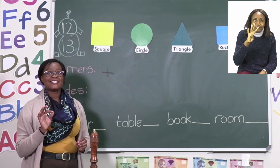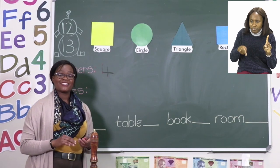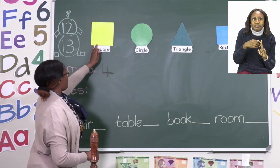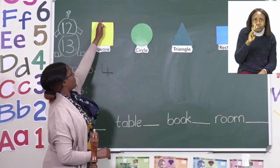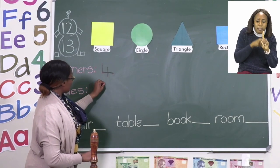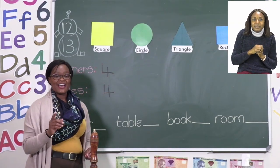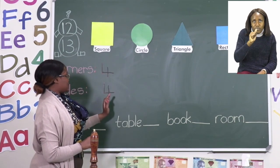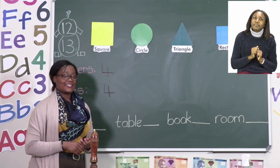Then we need to count the sides. It also says it has dash sides. Let's see how many sides it has: one, two, three, four sides. So it also has four sides. We know that shape's name is a square, and it has four corners and four sides. Let's move on to the next shape.